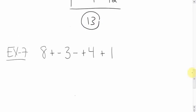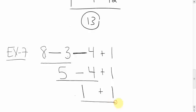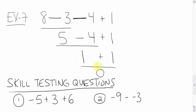For this last one, get rid of all the double signs first. You have a plus and a minus — they are different, so turn it into a single negative sign. You also have a minus and a plus — also different, so that also becomes a single negative sign. Now go left to right: 8 - 3 = 5. Bring down minus 4 and plus 1. Then 5 - 4 = 1. Bring down plus 1. Finally, 1 + 1 = 2.